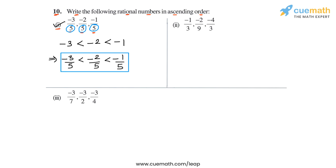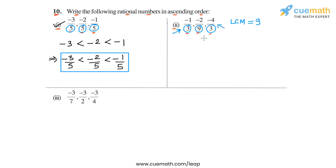In part two, we have the numbers minus 1 by 3, minus 2 by 9, and minus 4 by 3. Looking at the denominators, they are 3, 9, and 3, and the LCM of these denominators is 9. The second number already has denominator 9, so let's convert the first and third numbers into equivalent rational numbers with denominator 9.